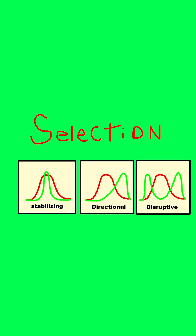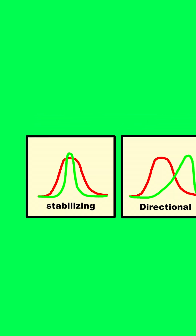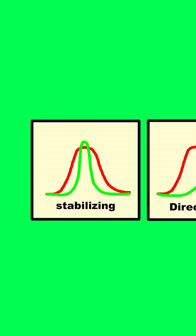The first one we want to go over is stabilizing selection. This is when the most common phenotype — the average phenotype — is selected for, and extremes away from this phenotype are not advantageous. The best way to learn this is, again, with an example.